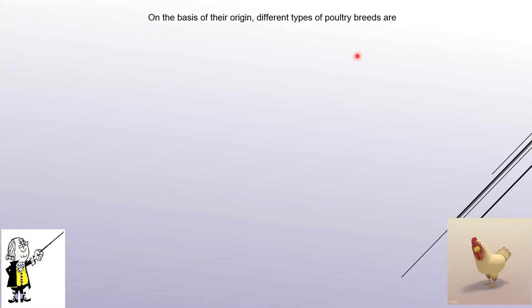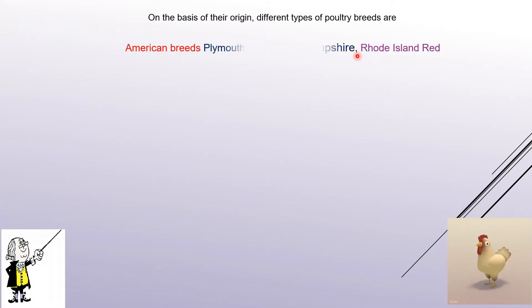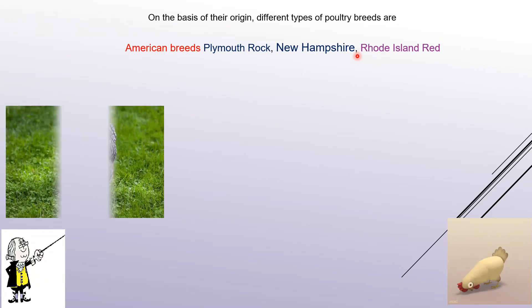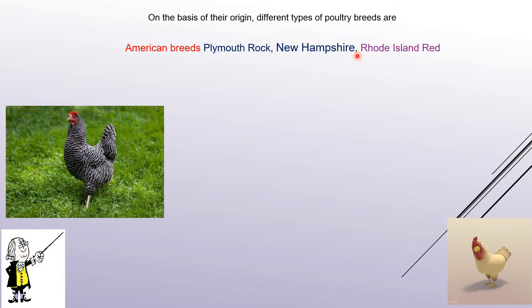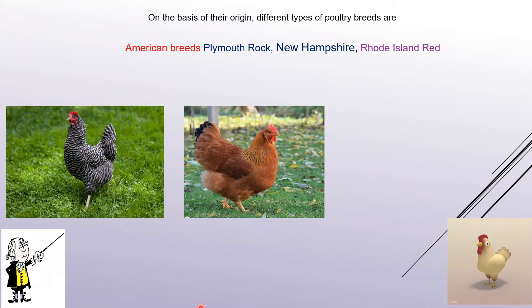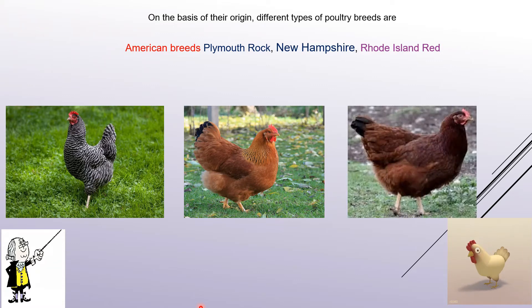On the basis of their origin, there are different types of poultry breeds. The first are American breeds, which include Plymouth Rock, New Hampshire, and Rhode Island Red.